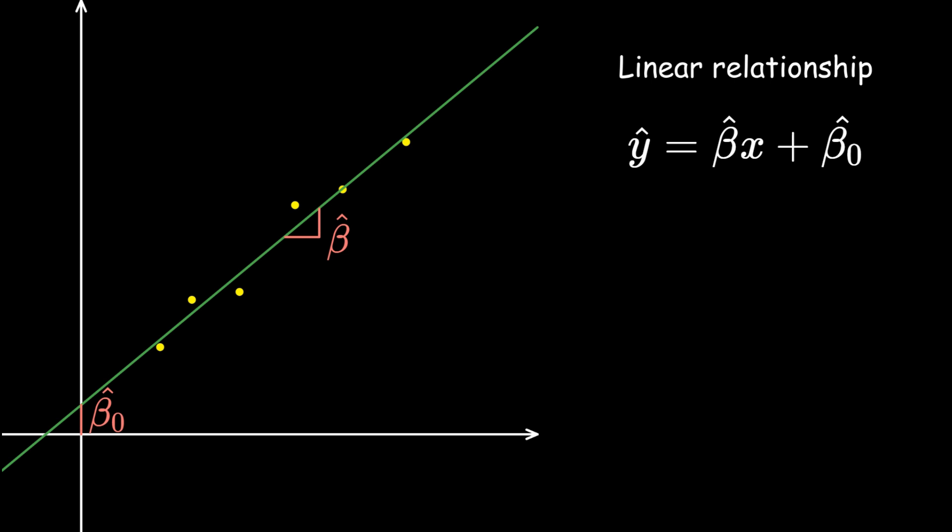Anyway, we assume that the two variables have a linear relationship. That is, as x increases, y also increases with it linearly. This linear relationship is given by the equation y equals beta x plus beta naught, where beta is the slope, and beta naught is the y intercept.